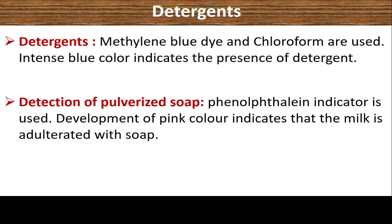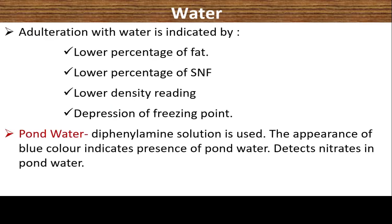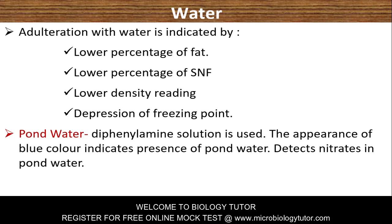Detergents: methylene blue dye and chloroform are used — intense blue color indicates presence of detergents. Detection of pulverized soap: phenolphthalein indicator is used; development of pink color indicates milk is adulterated with soap solution. Water adulteration is indicated by lower percentage of fat, lower percentage of SNF, lower density reading, and depression of freezing point. Pond water: diphenylamine solution is used; blue color indicates presence of pond water by detecting nitrates.